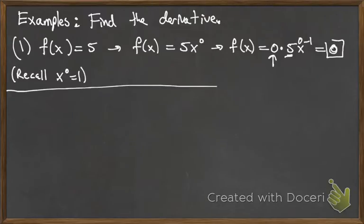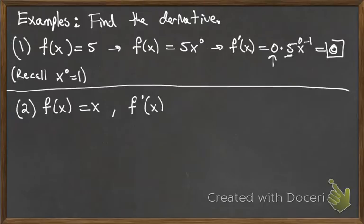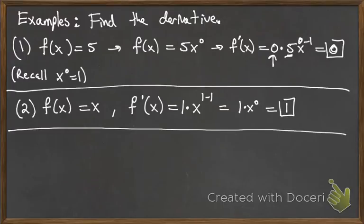Next, f(x) = x. This is just the identity function — a line with slope 1. Applying the power rule: bring down the exponent of 1, so f′(x) = 1·x^(1−1) = 1·x^0 = 1·1 = 1. The derivative is 1, confirming the slope is 1.